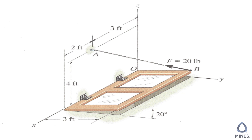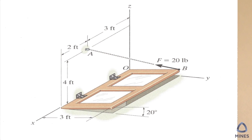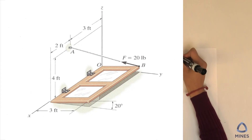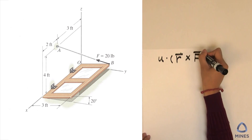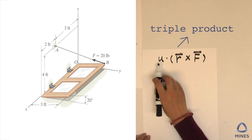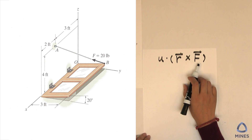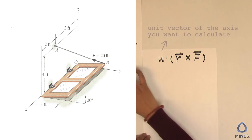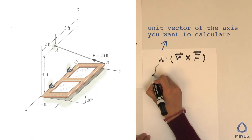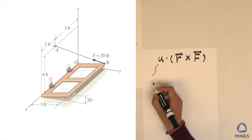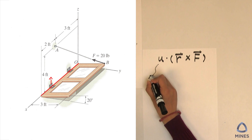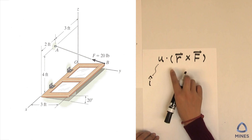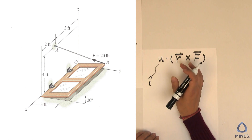For this problem we have to find out what is the moment around the x-axis. This is a moment around an axis problem, which means the first equation you are going to think about will be a triple product: u dot (r cross F). We have to think about what is u, what is r, and what is F. The u here will be the unit vector of the axis you want to calculate — in our case the x-axis — so that will be just î hat.